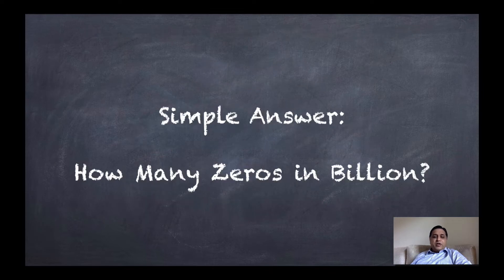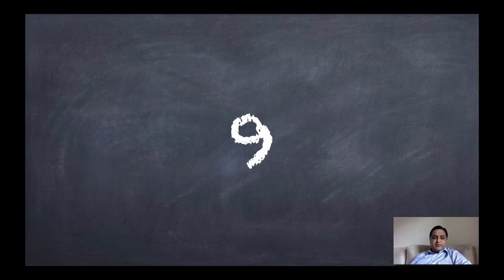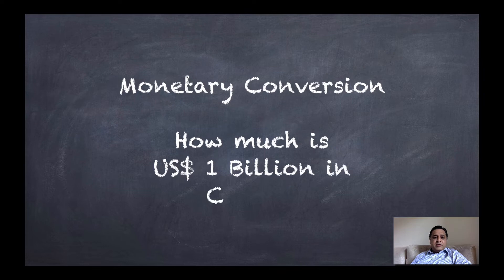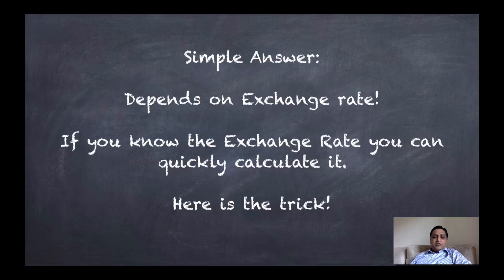The simple answer — how many zeros in a billion is 9. Now let's look at how the conversion works, and I will also talk about how much 1 US dollar billion is in crores. You can use a calculator to convert 1 billion dollars to Indian rupees, but what if you are in a board meeting talking about millions and billions and you need to quickly get a sense of how much money it is?